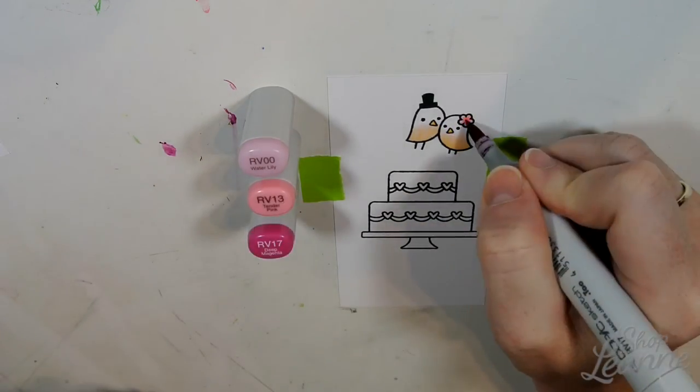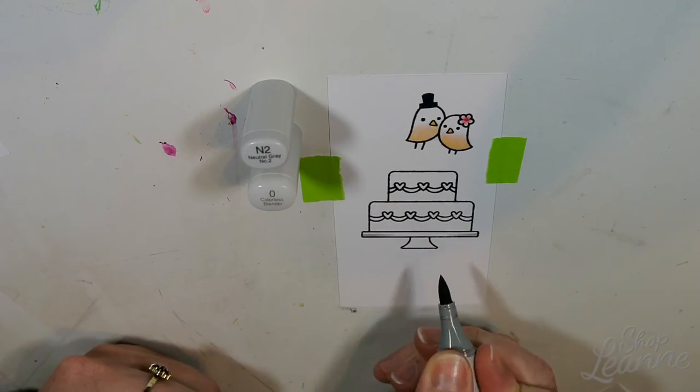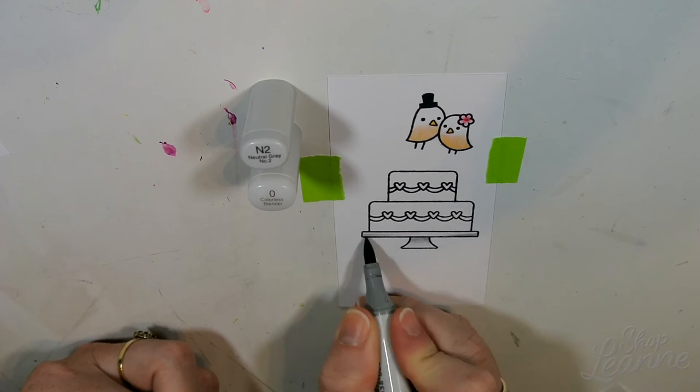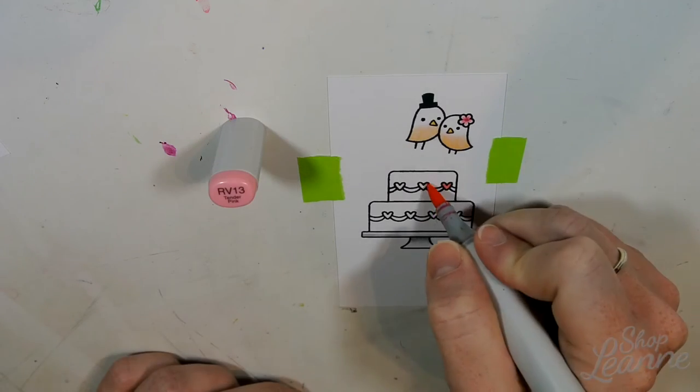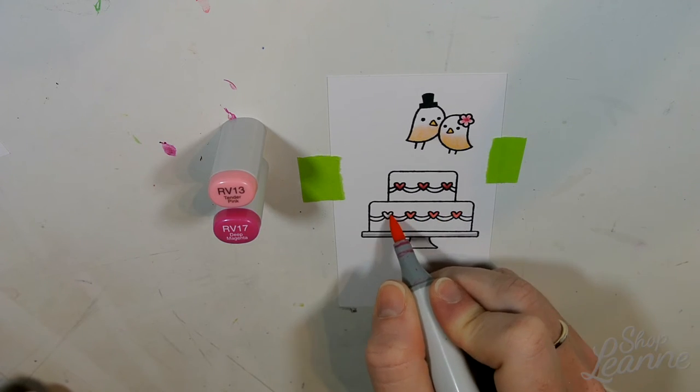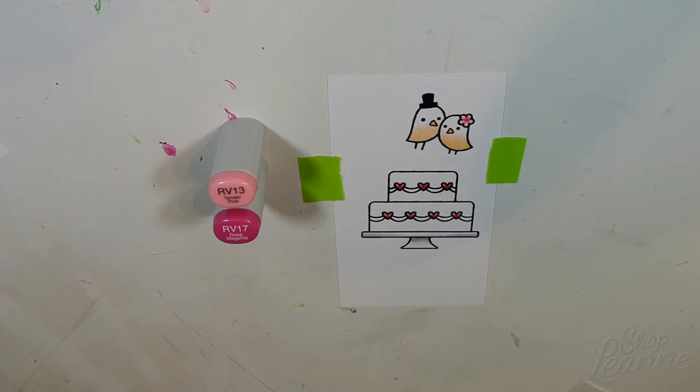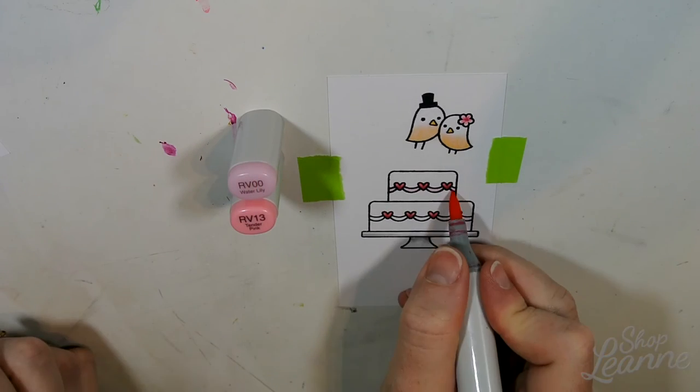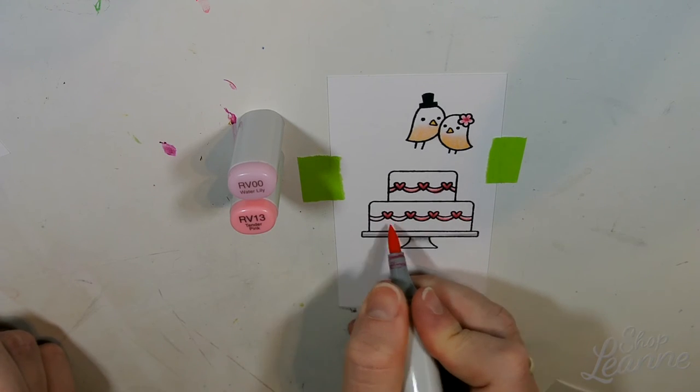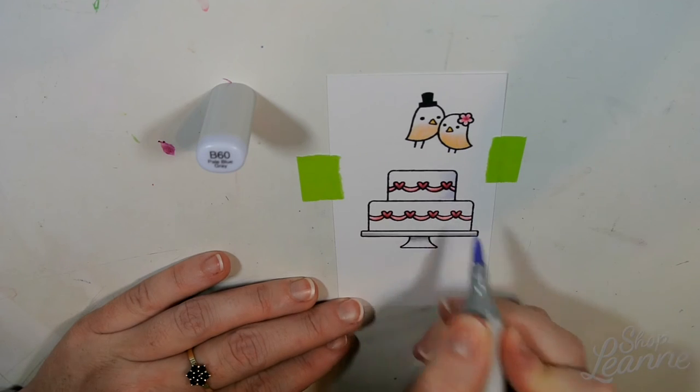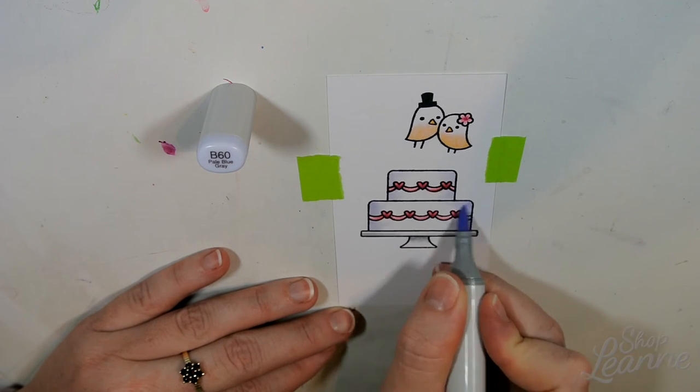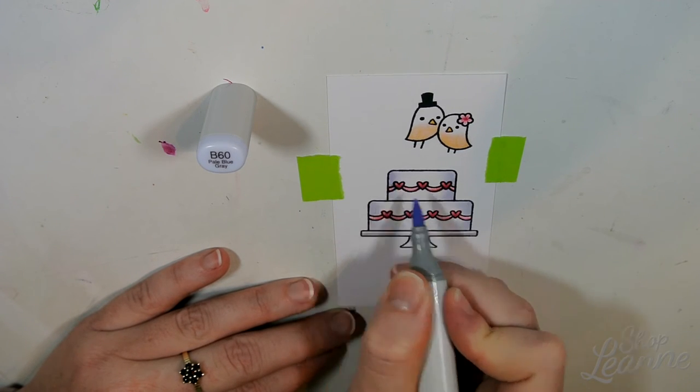Here I'm coloring in the little chicks and the cake from the stamp set. I'll put all the colors in the description below with links as well. I wanted to keep this kind of light and whimsical, so I'm using a lot of colorless blender to blend in those lighter colors. Her wedding theme is baby pink, so that's why I'm using this color scheme.